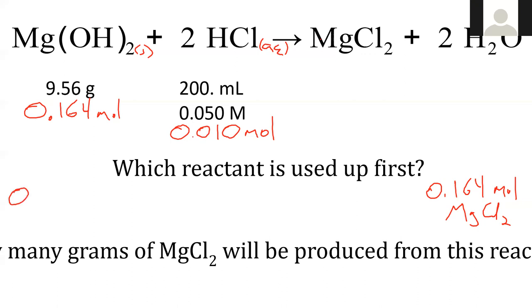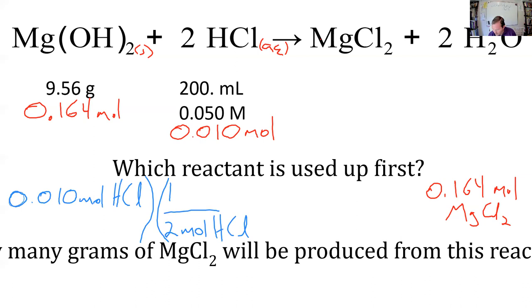So if I wanted to finish showing my work for the, we'll switch colors. 0.010 moles of HCl, and for every 2 moles HCl, we could make 1 mole of product. So if we use up all of our HCl, we can make 0.0050 moles.